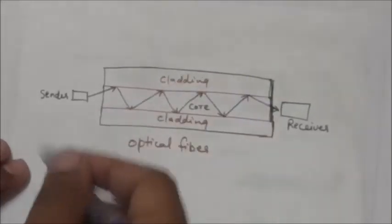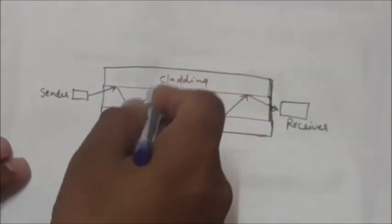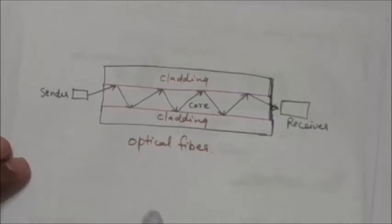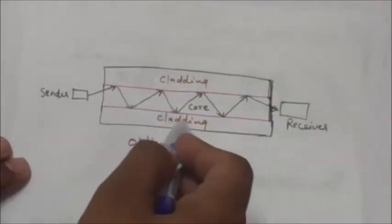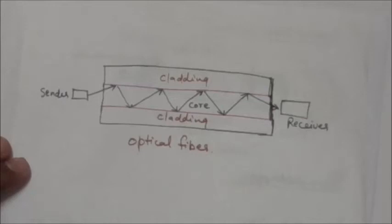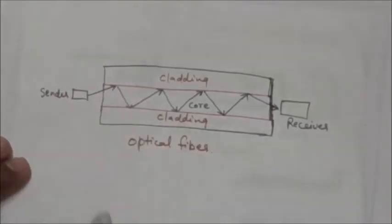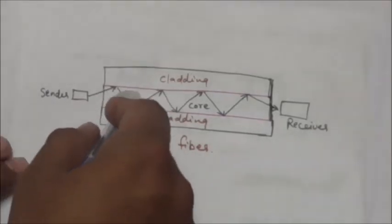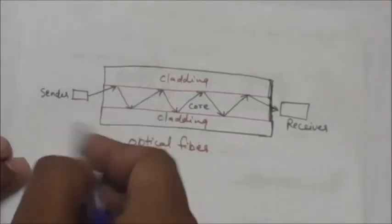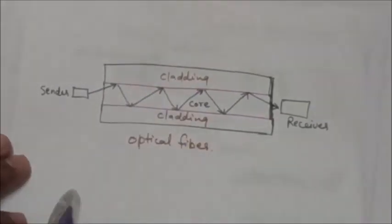Optical fibers use reflection to guide light through a channel. A glass or plastic core is surrounded by a cladding of less dense glass or plastic. The difference in density of the two materials must be such that the beam of light moving through the core is reflected off the cladding material instead of being refracted into it.